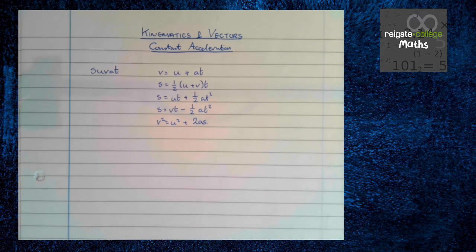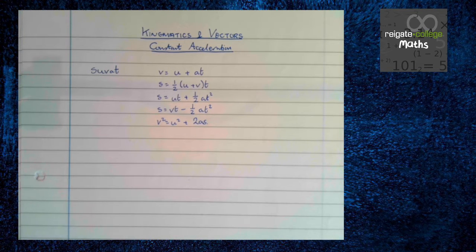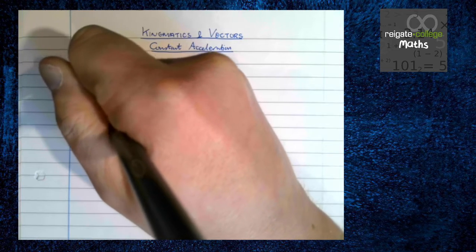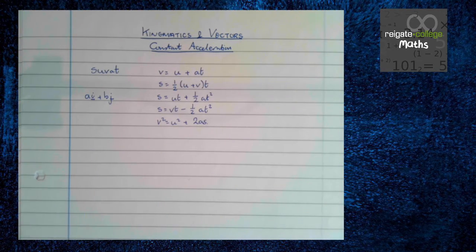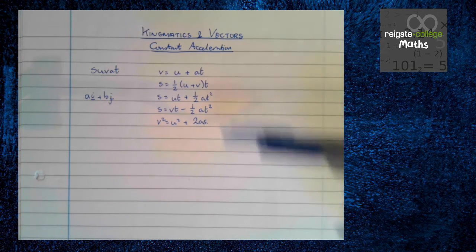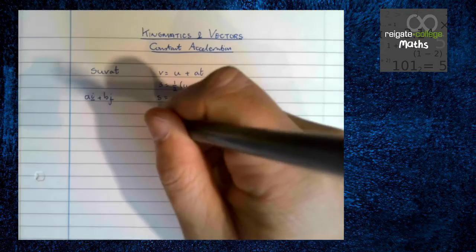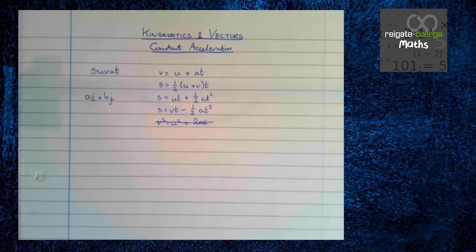Now when we start thinking about vectors we need to be very careful with these SUVAT equations. One of these doesn't work because of the quantities that are vectors in SUVAT. So four out of the five SUVAT quantities are vector quantities: displacement, the two velocities, and acceleration. So when we start dealing with vectors in the form a i plus b j, these are not just numbers, they are vectors. So one of our five SUVAT equations doesn't work and it's this last one.